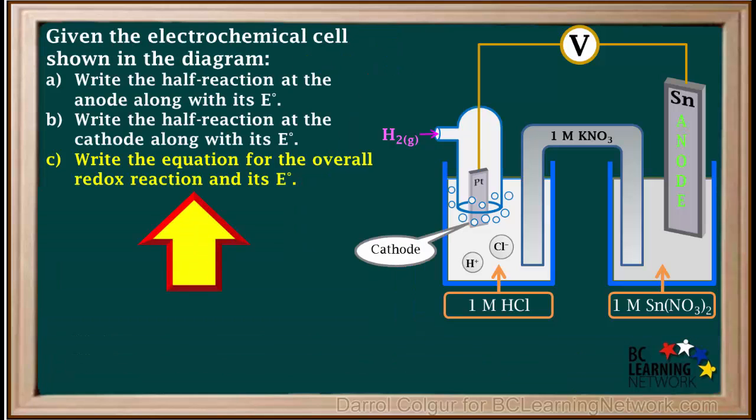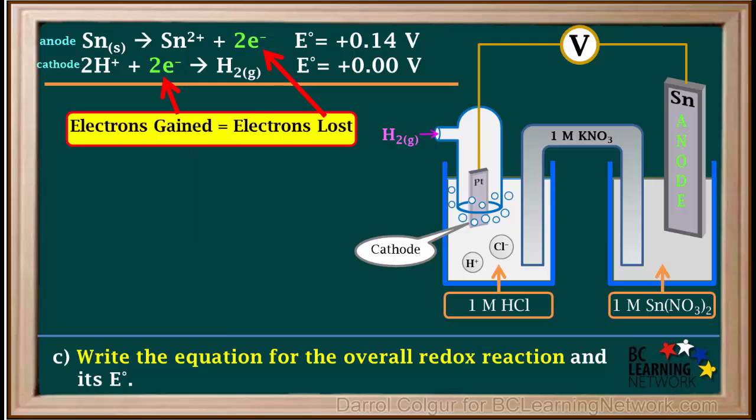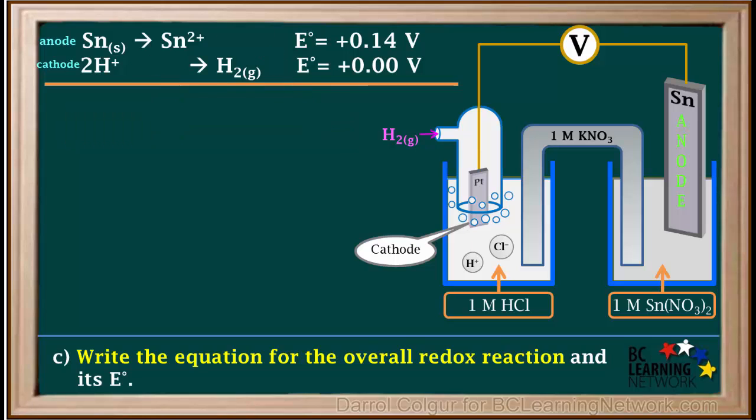The C part of the question asks us to write the equation for the overall redox reaction, along with its E° value. To write the equation for the overall redox reaction, we add up the half reactions the way they are written. Electrons gained are equal to electrons lost, so we don't need to multiply any of the half reactions, and we can cancel out electrons.